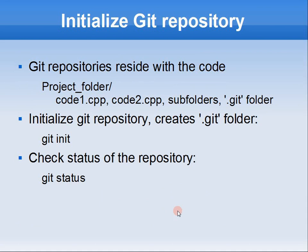Git repositories live within the code itself. If you have your project folder with all your source files, there will be a subfolder called .git which stores the whole repository. In SVN you have your working copy in one folder and the repository in a different location — this is a bit different. You also have to think beforehand whether you want separate repositories for separate projects or to put everything in a single repository.